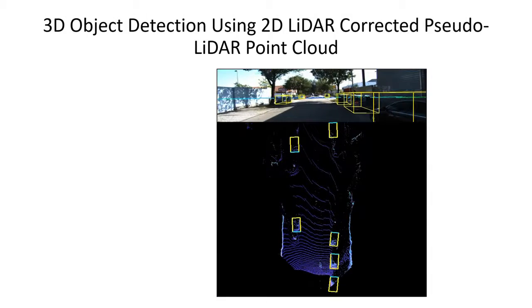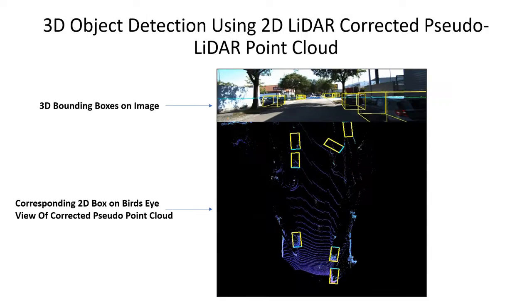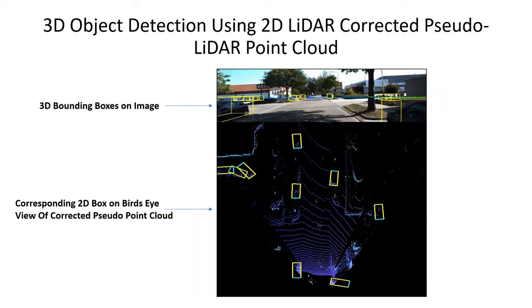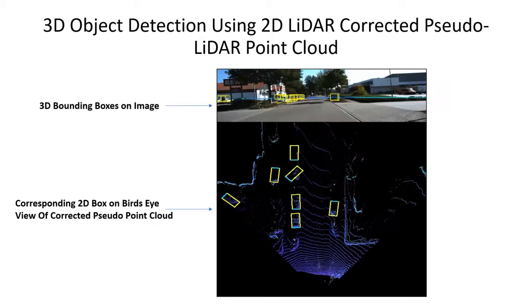Using our second method, the 2D LIDAR corrected pseudolidar is provided to our 3D object detection network. We observe a significant improvement in the 3D object detection accuracy.